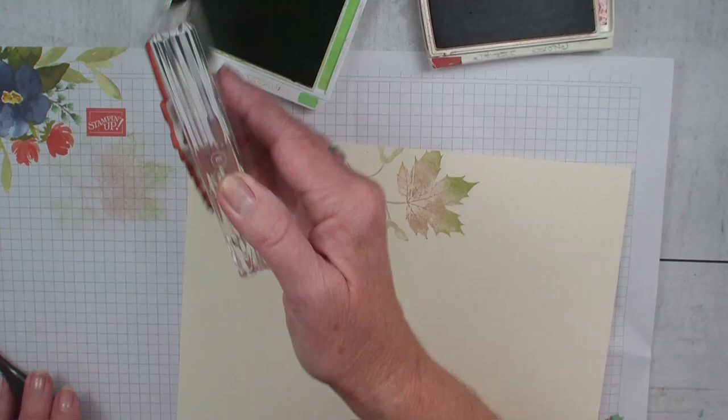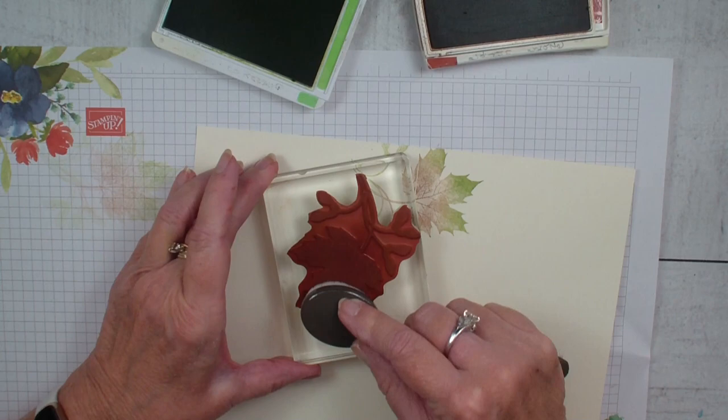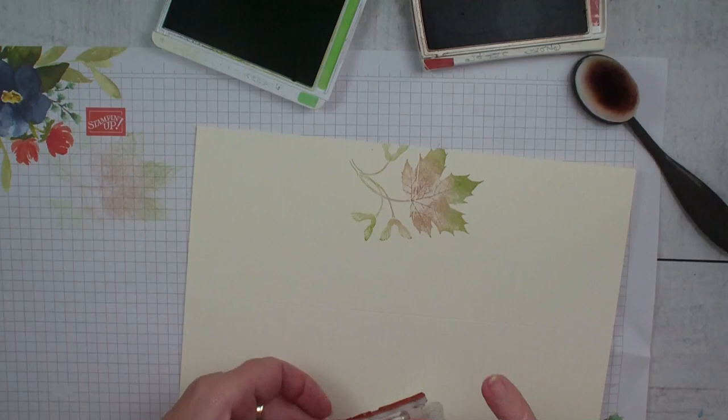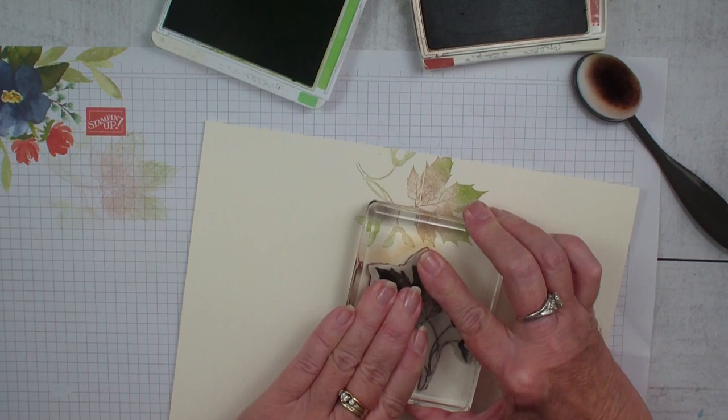And each time I stamp, I'm just going to stamp off to get that color off. Again, I'm going to go in with the green and add the Cajun Craze with my blending brush. I'm going to add that.